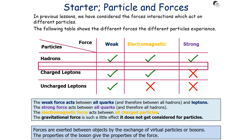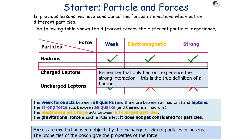We can also consider the different forces that different particles experience. The weak force acts between all quarks — so all hadrons and leptons. The strong interaction will only act between hadrons, things made from quarks. The electromagnetic force acts between all charged particles. And the gravitational force has such a little effect, it does not get considered for particles. These forces, or interactions, are exerted between objects with the exchange of virtual particles or bosons, and the properties of the boson give the properties of the force. It's a key important idea that only hadrons experience the strong interaction, which is the true definition of a hadron.